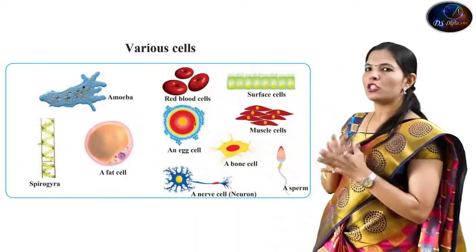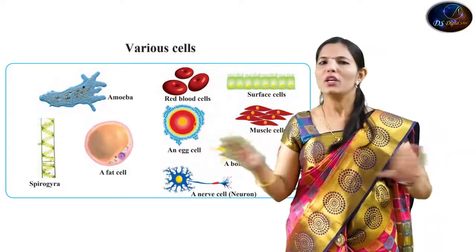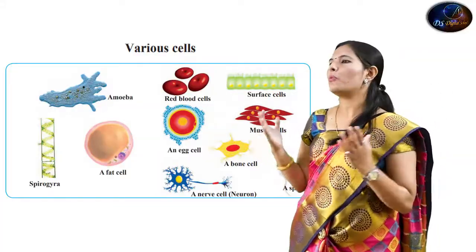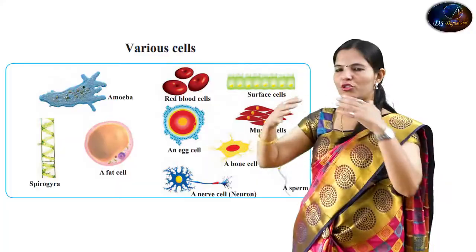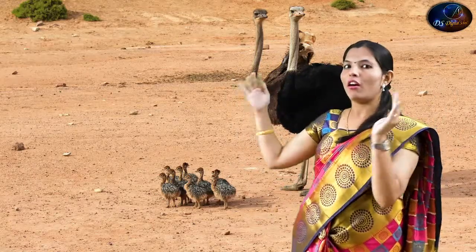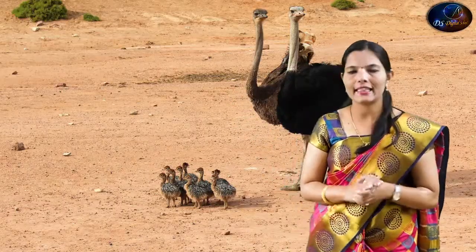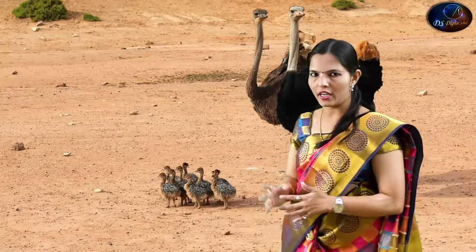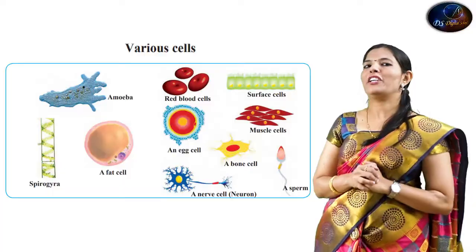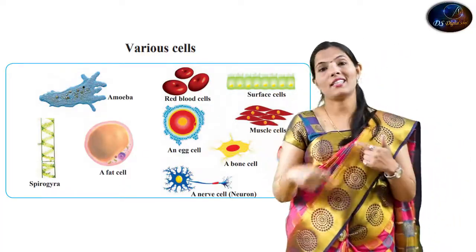Now, the next point is the size of the cell. Cells are different in size — some are small and some are big. Cells also have different shapes. The shape and size of a cell depend on its function.